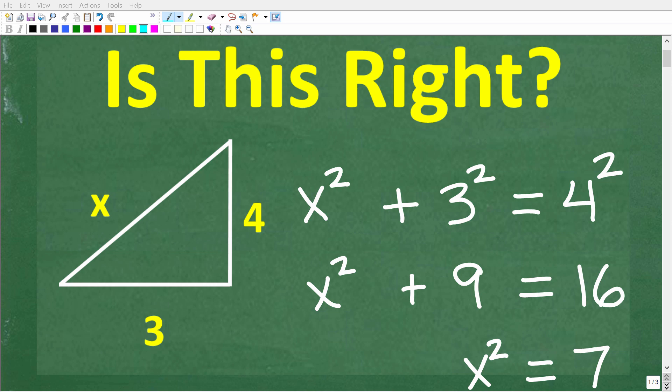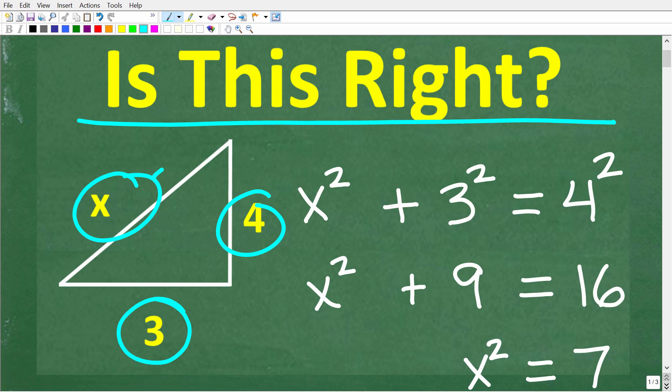If you actually understand mathematics, you ought to be able to grade this problem and tell me if this solution is right. So here is the problem. We have a triangle with sides 3, 4, and x, and we're trying to determine this length right here, x.